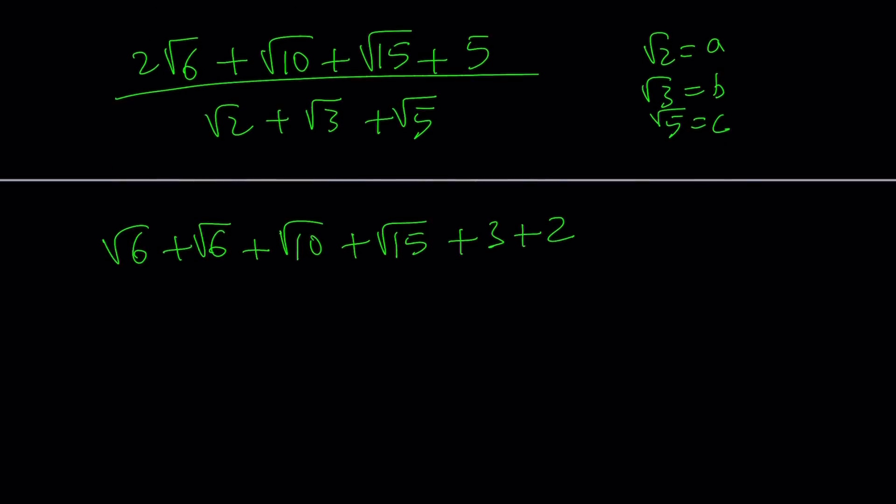Now why do I do this? I want to make the numerator factorable and I want to factor by grouping, but as is, it's not factorable. So I want to split up the terms to see if I can make good groups. Since I have 6 terms in the numerator, I can either make 2 groups of 3 or 3 groups of 2.